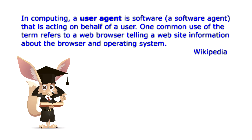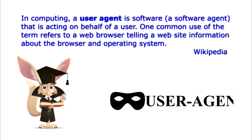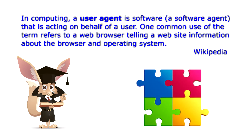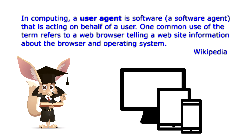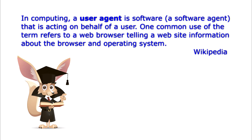User agent is the user data which the browser sends to the server. The data contain information about the browser used, its version, language, plugins, your operating system, the type of device used to access the internet — be it a notebook, a smartphone, or an iPad — as well as the functions your browser supports.